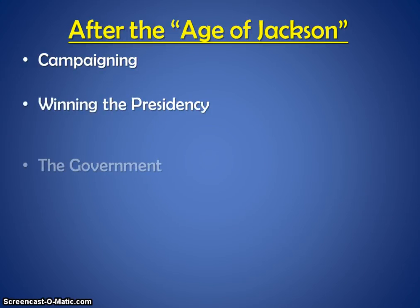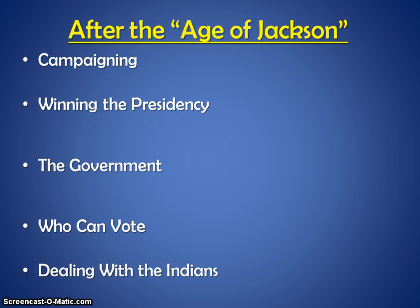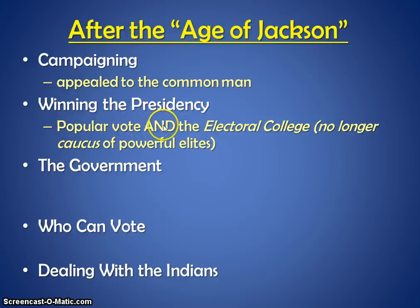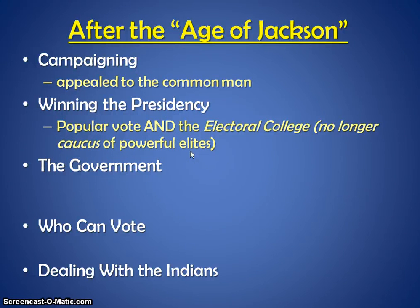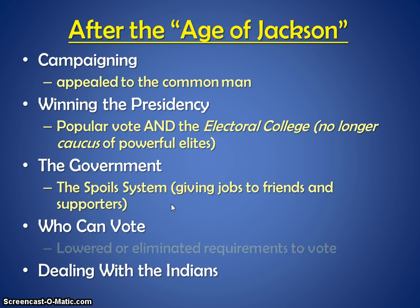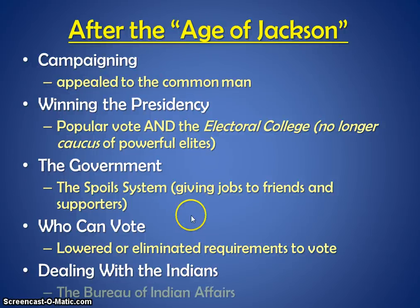Looking at how things changed after the Age of Jackson: campaigning now means appealing to the common man. Winning the presidency shifted to relying on the popular vote and the electoral college, rather than a caucus — a meeting of powerful elites who basically picked the president themselves. The government saw the spoils system of giving jobs to friends and supporters. And requirements for who can vote were lowered or eliminated. We'll get into Jackson's role with Native Americans and the Bureau of Indian Affairs next.